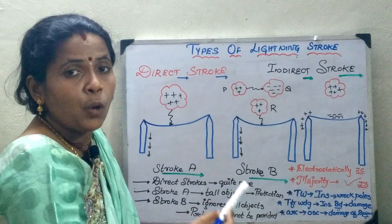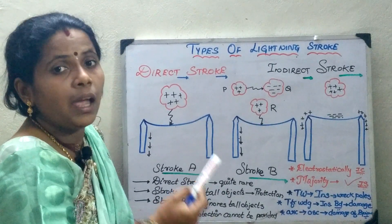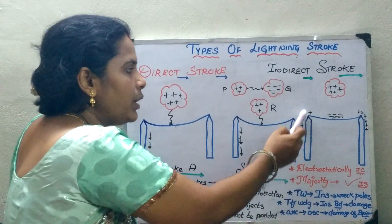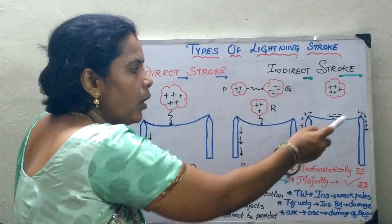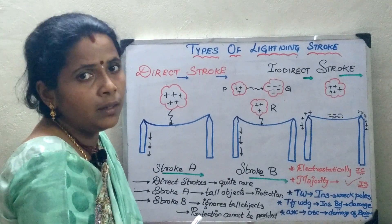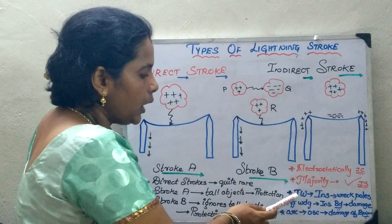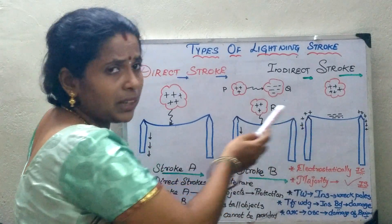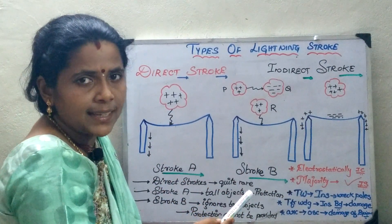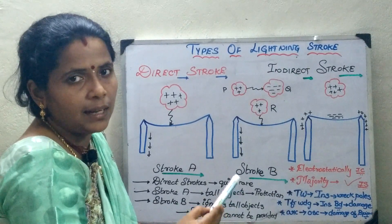Most of the lightning strokes that occur in nature are indirect strokes, which cause travelling waves to be set up in the line or induce a voltage surge in the line. The main drawback of this type of lightning is that it results in travelling waves being set up in the line.